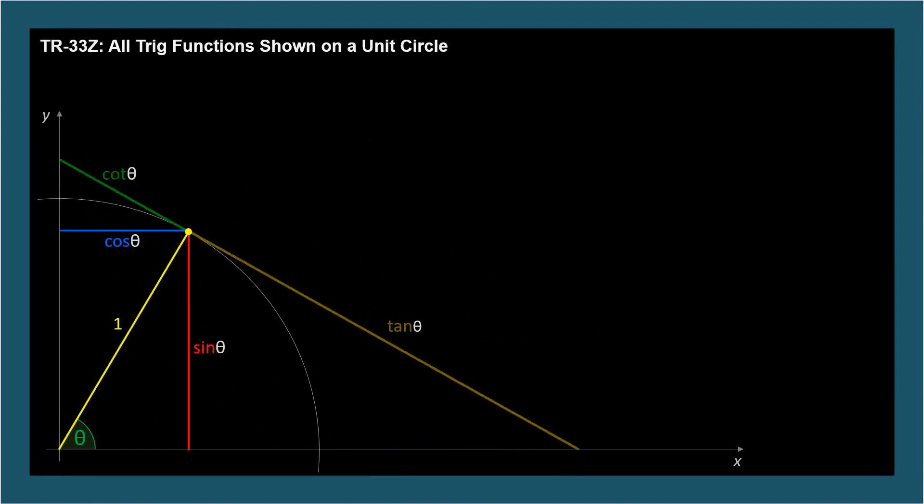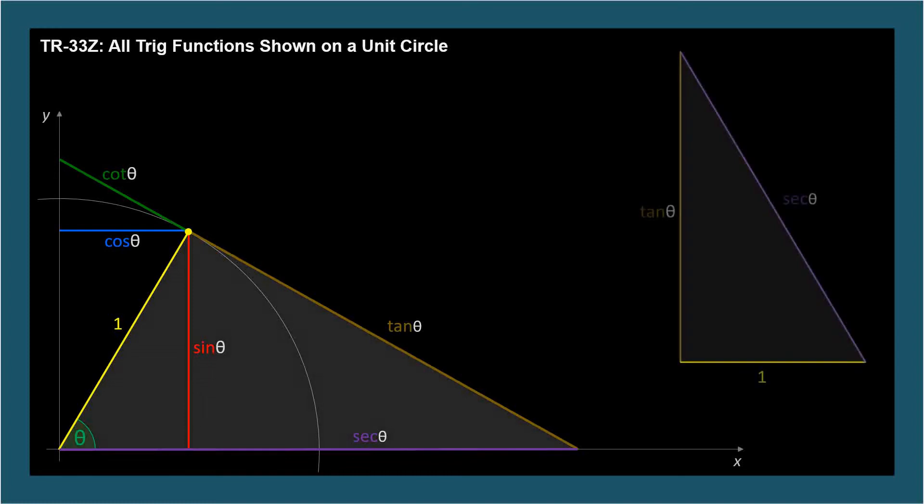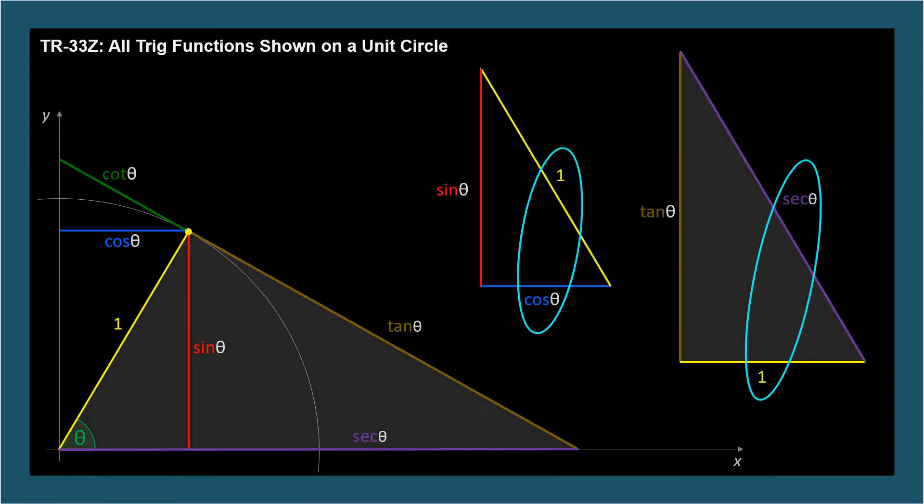Two more to go. The purple length down on the x-axis corresponds to the secant. Here are our triangles. And as usual, we choose the trig function over 1 and the corresponding sides on the other triangle. In this case, 1 over cosine, which equals secant.